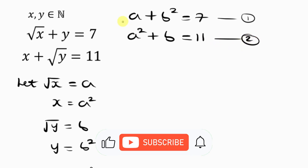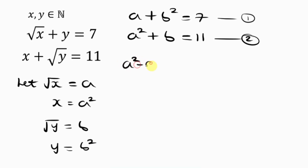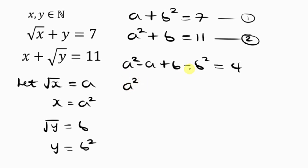Now let's subtract equation 1 from equation 2. Subtracting, we get: a squared minus a plus b minus b squared equals 4. Let's bring the squared terms together: a squared minus b squared, plus b minus a, equals 4.